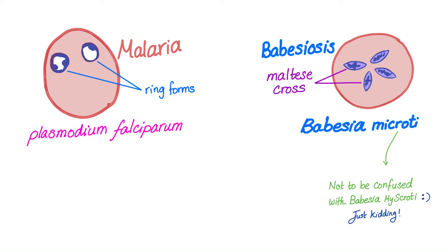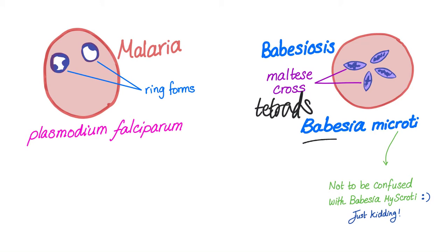There are two famous parasites that infect your red blood cells: malaria and babesiosis. For malaria, here we have one called Plasmodium falciparum — these forms are called ring forms, which are inclusion bodies inside the red blood cell. These are the trophozoites of the malaria. On the other hand, Babesia trophozoites appear as pear-shaped elongated structures known as the Maltese cross or tetrads, because there are four of them — such as Babesia microti.